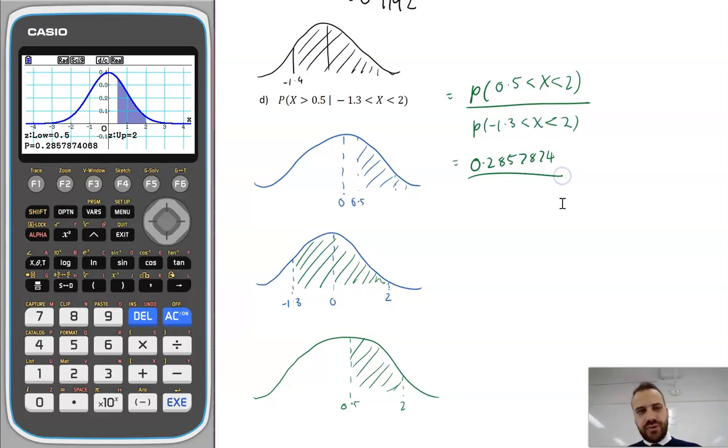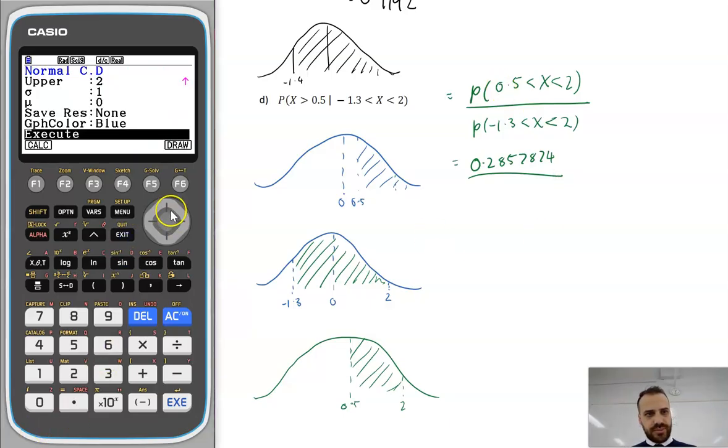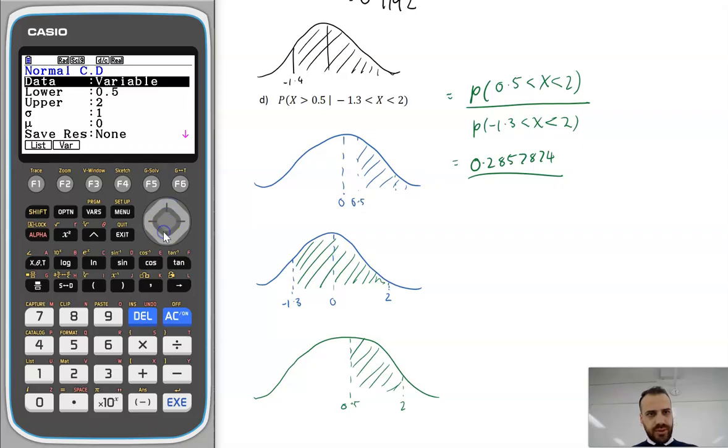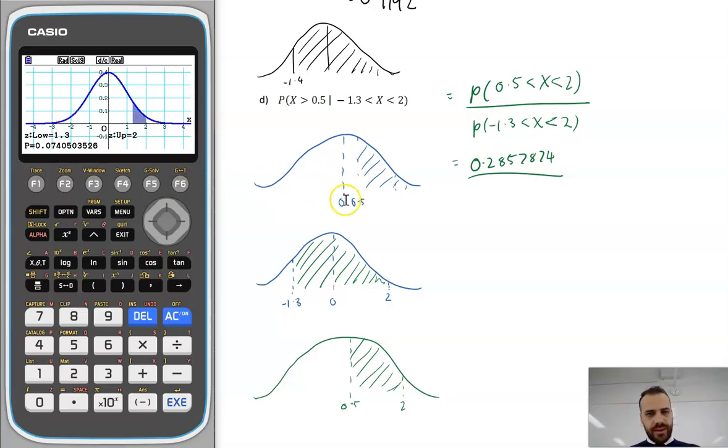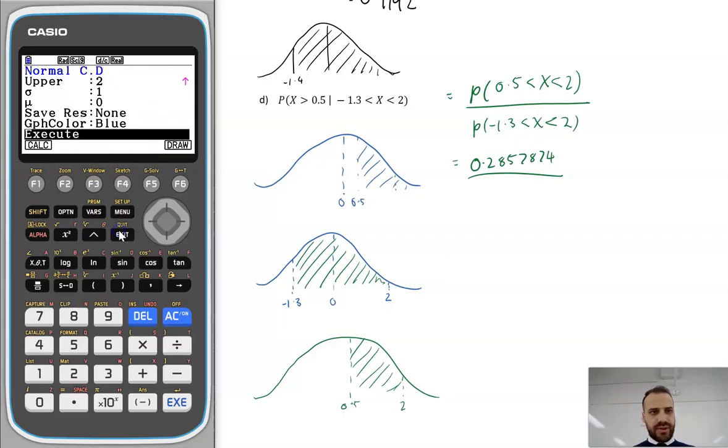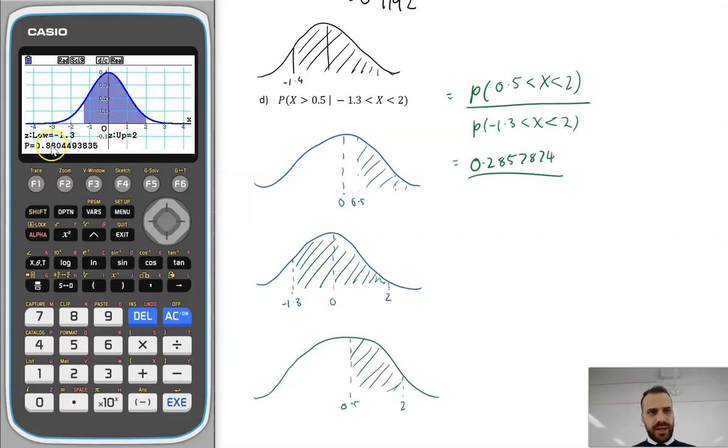Okay, and then divide it by 1.3 to 2. Lower, negative 1.3 to 2. That looks right, and then we'll draw that. That's not what I wanted, I want negative. That's why I draw them, because I like to make sure that what was in my head got onto the calculator. That's better. 0.880449.